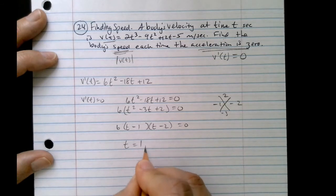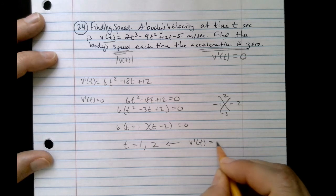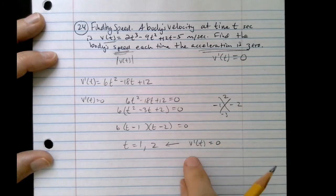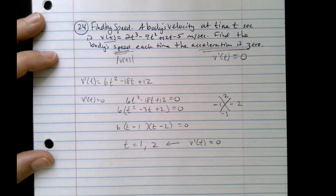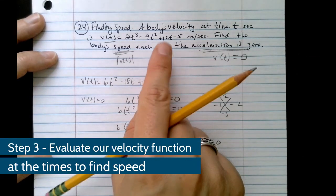So I'm going to get t equals one and t equals two. Now, what did we just find? These are the times when the acceleration is zero. Acceleration, remember, is the first derivative of velocity. Now, what are we going to do? We're now going to find the speed at that time.